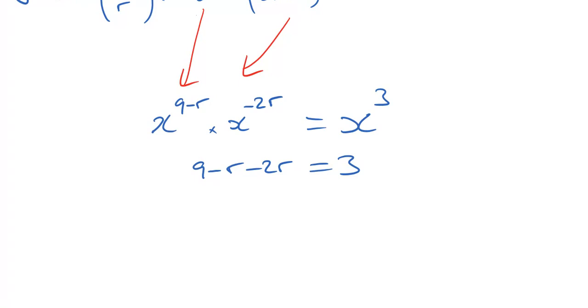And if we collect up the minus r and the minus 2r and move it across to the right and take things across to the left, we're going to end up with 6 is equal to 3r. And of course, that means that r is going to be 2.